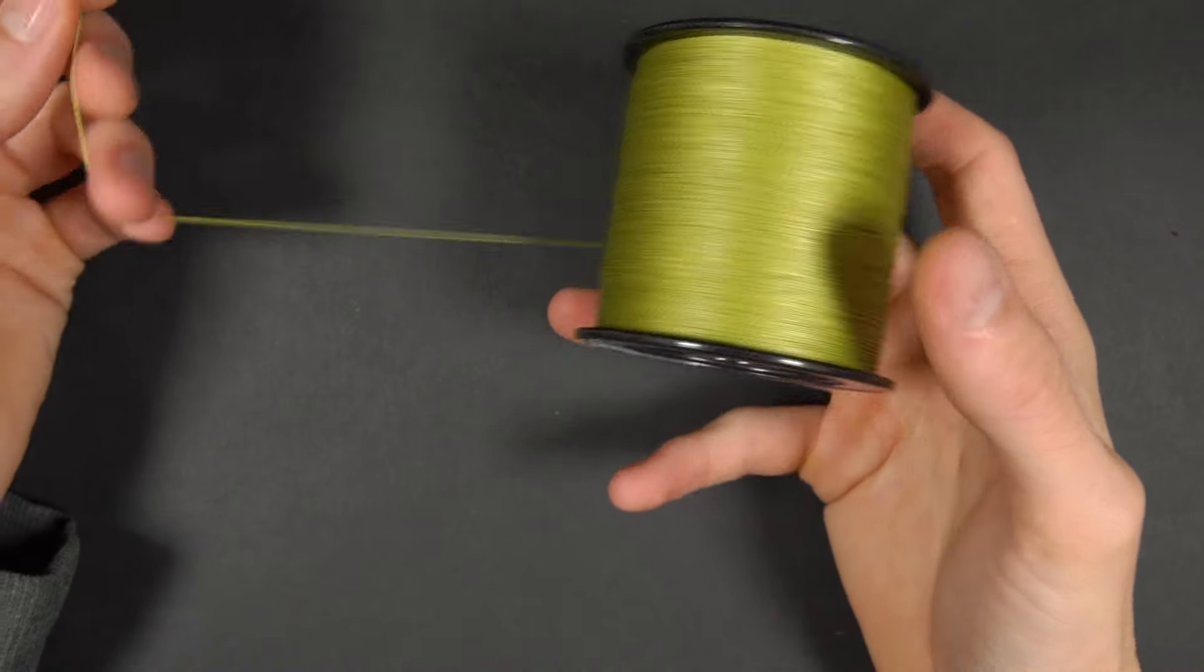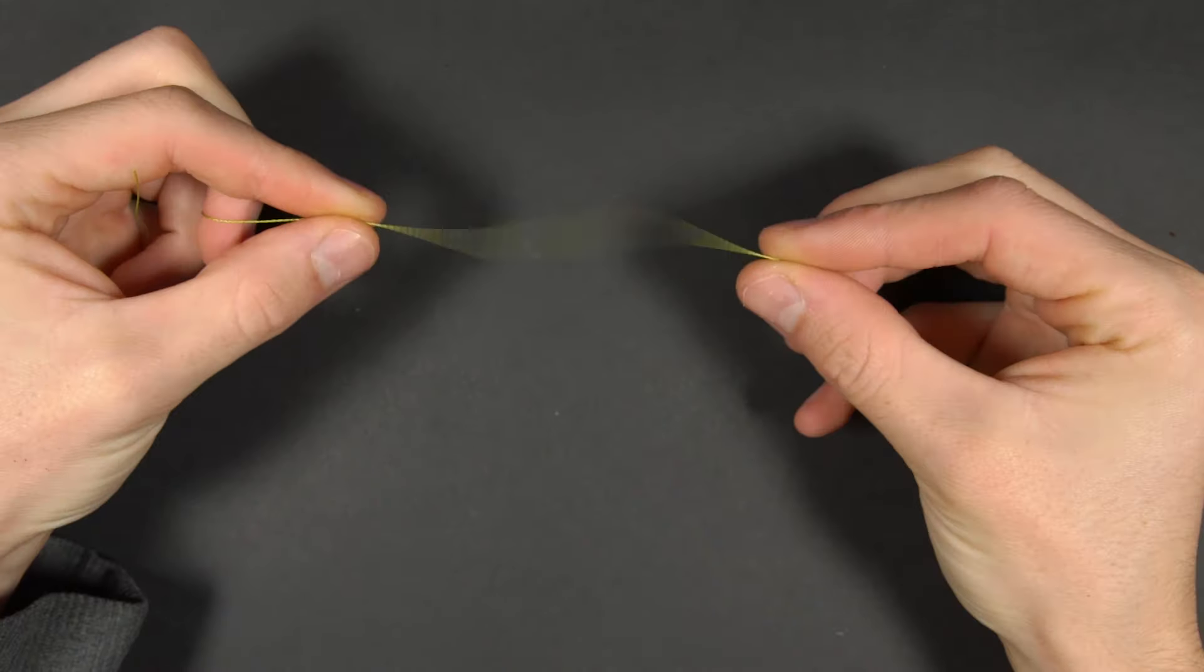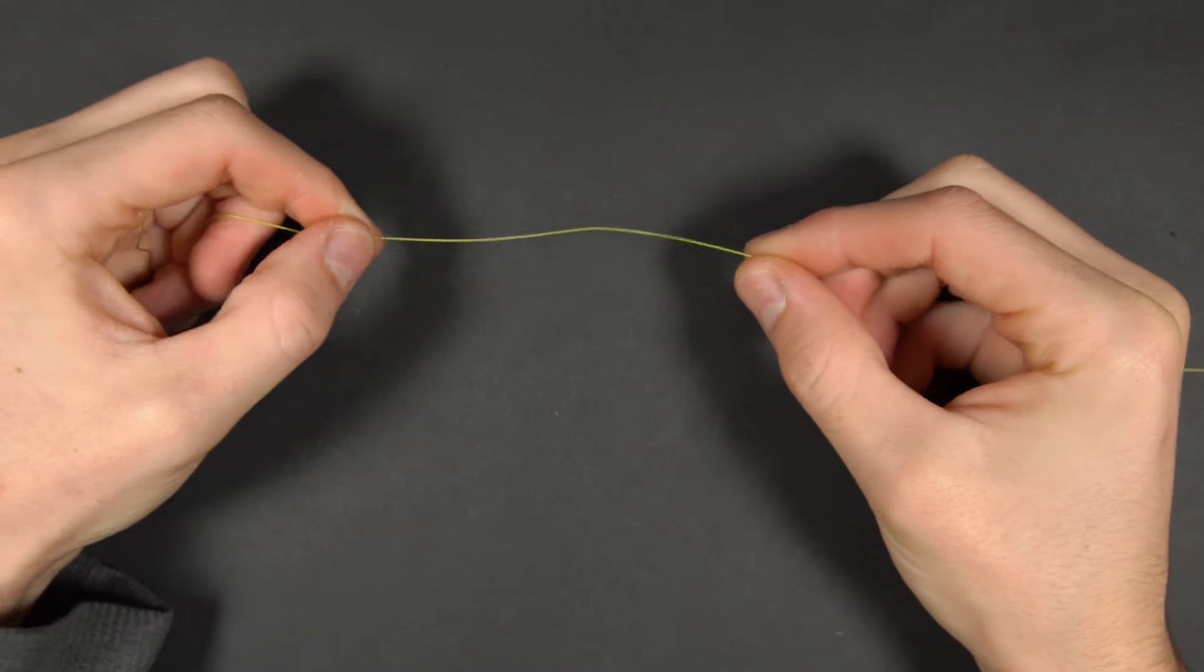For this demonstration we are using bright yellow braid, simply so that you can see it easily. You can use your normal line or braid with this knot.